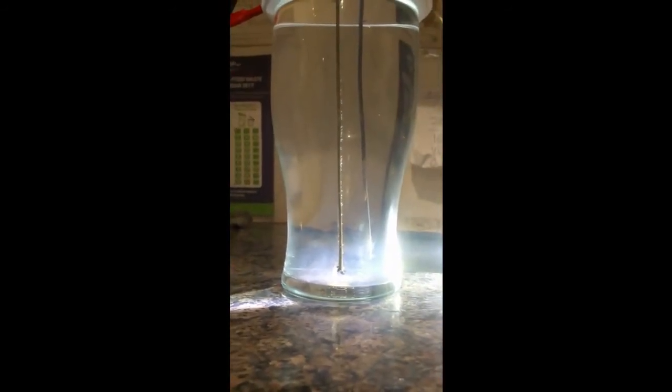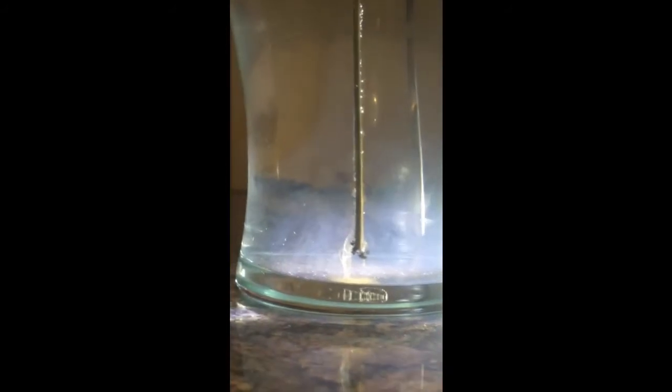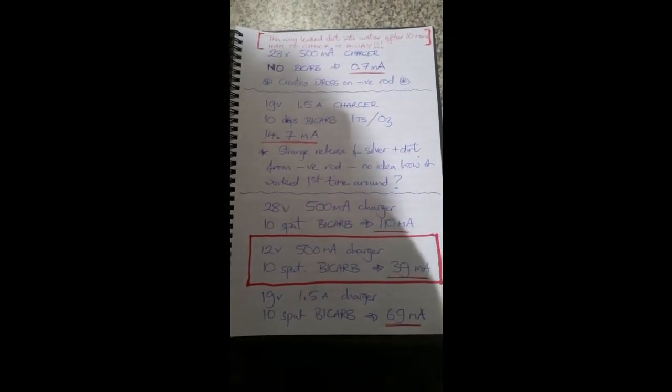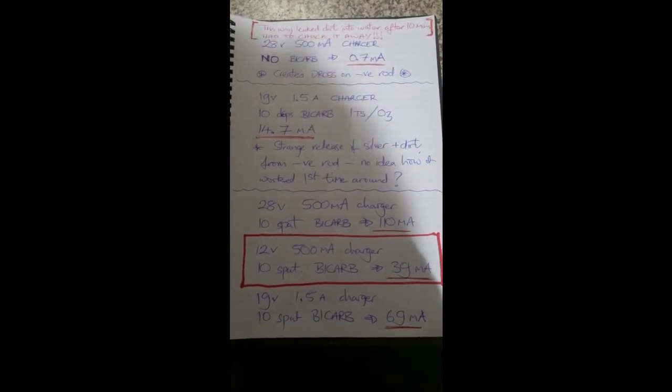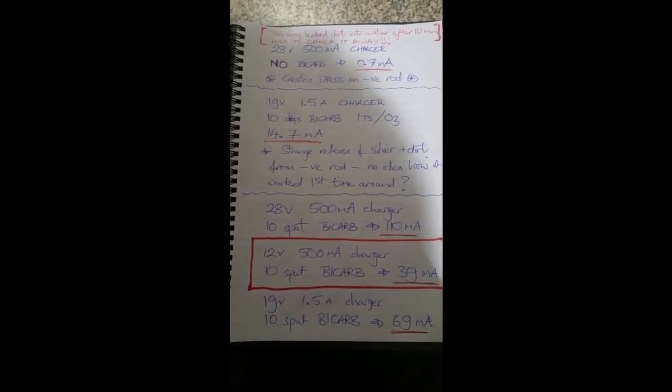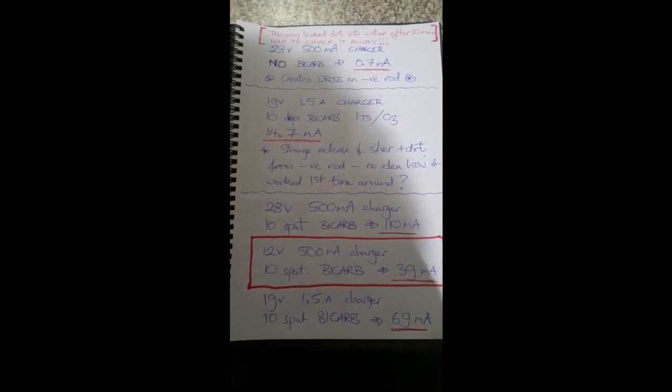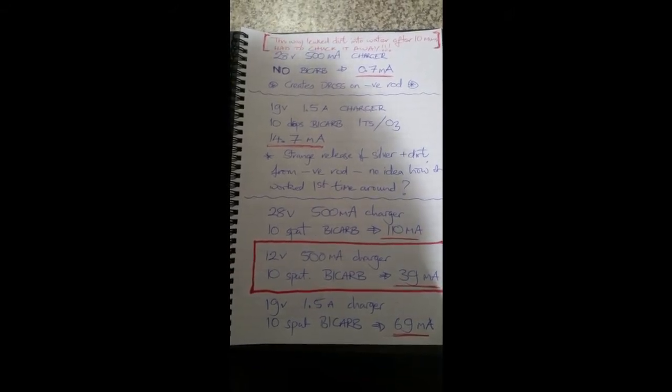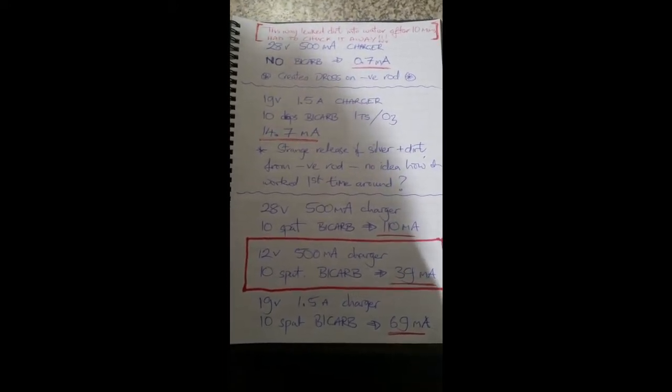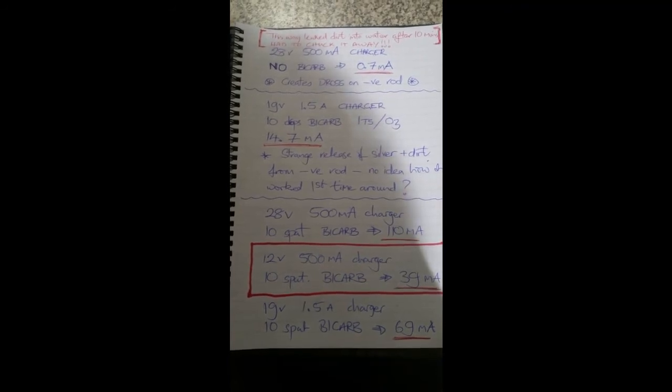If anyone out there has some suggestions about how to improve this or get rid of this dirt and stop it finding its way into the solution, please let me know. Hello, and back to my list here. The first option at the top there has not gone very well as you can see. The next option, the 19 volt 1.5 amp DC charger also didn't go too well. I tried that earlier on today using 10 drops of bicarb, using a solution of one teaspoon to one fluid ounce. That's one level teaspoon of bicarb to one fluid ounce of distilled water, 10 drops of that in one pint of distilled water, and that created 14.7 milliamps of current.